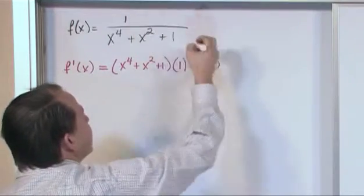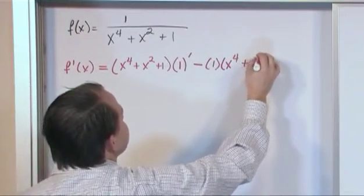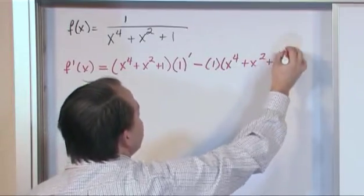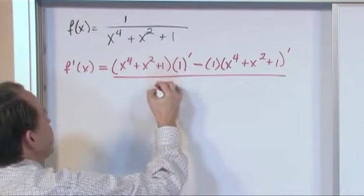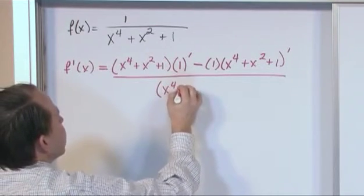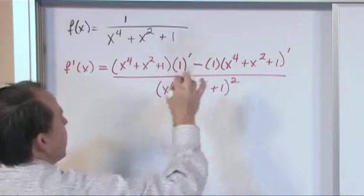Minus the top function, which is this, times the derivative of the bottom function, x to the fourth plus x squared plus 1. And we need to take its derivative so we'll mark it like that. Over the bottom function x to the fourth plus x squared plus 1 squared.